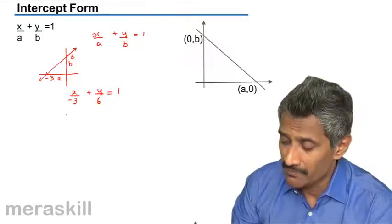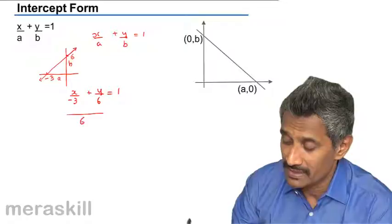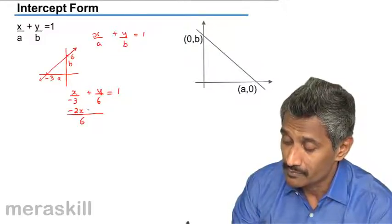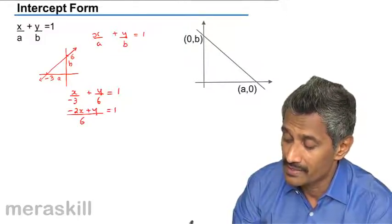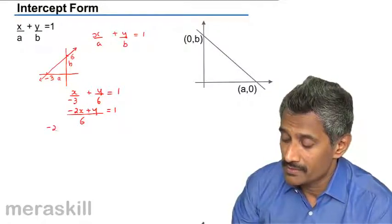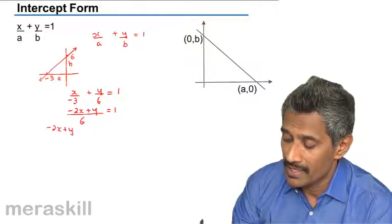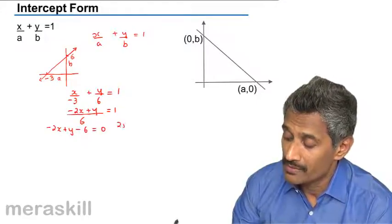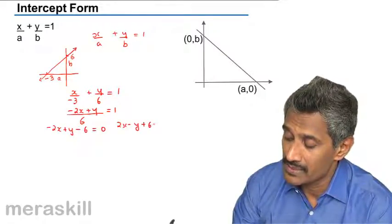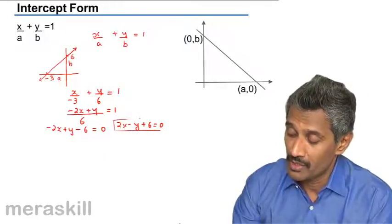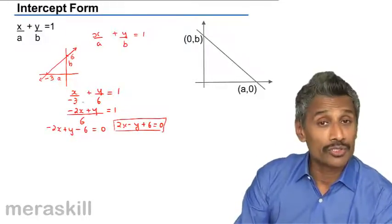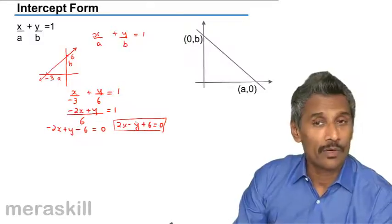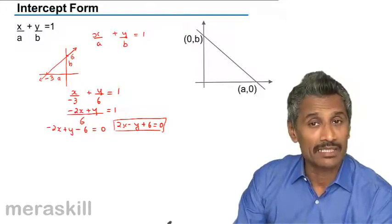We can further simplify this. If we take the LCM as 6 we get minus 2x plus y is 6, which means minus 2x plus y minus 6 is equal to 0, or 2x minus y plus 6 is equal to 0, which is ax plus by plus c equals 0.